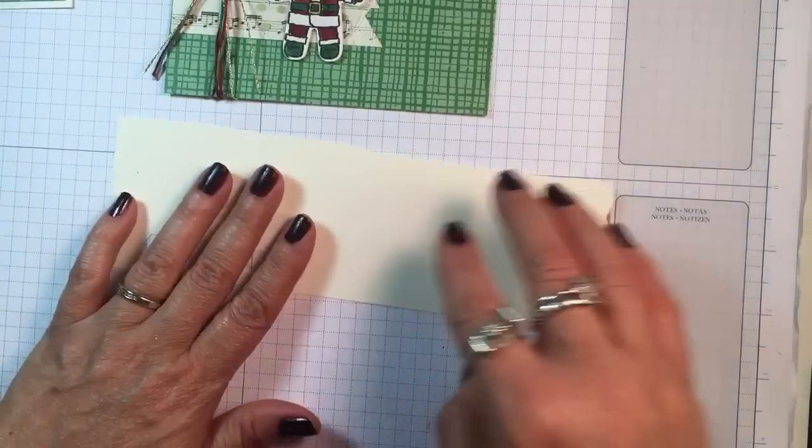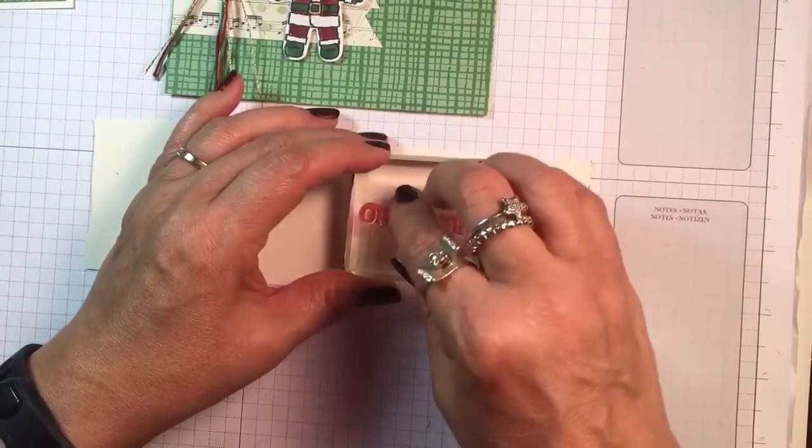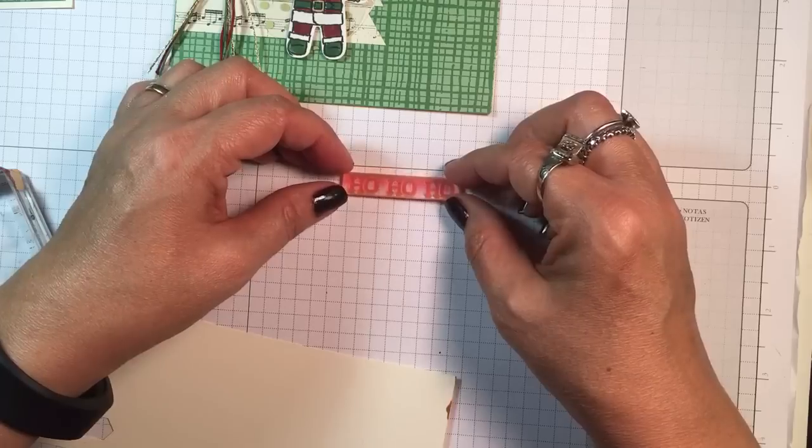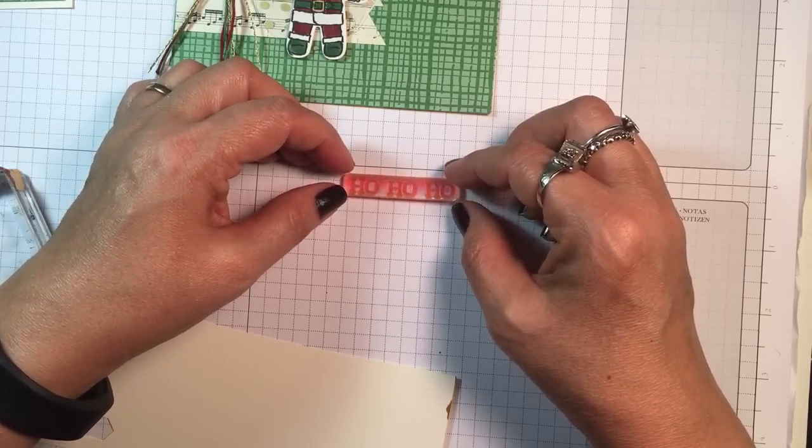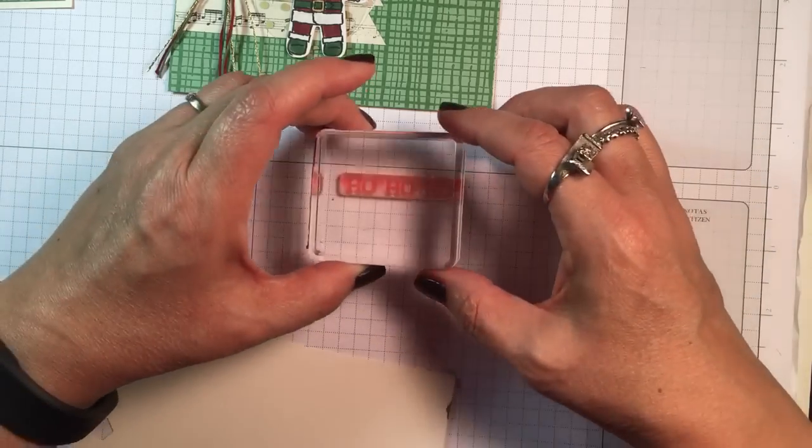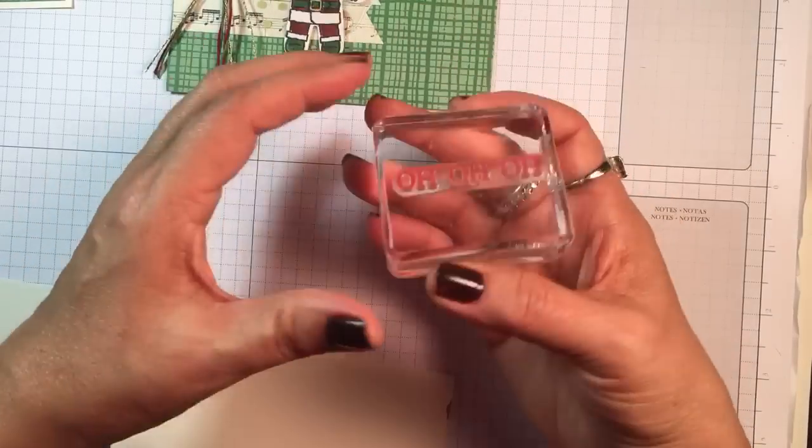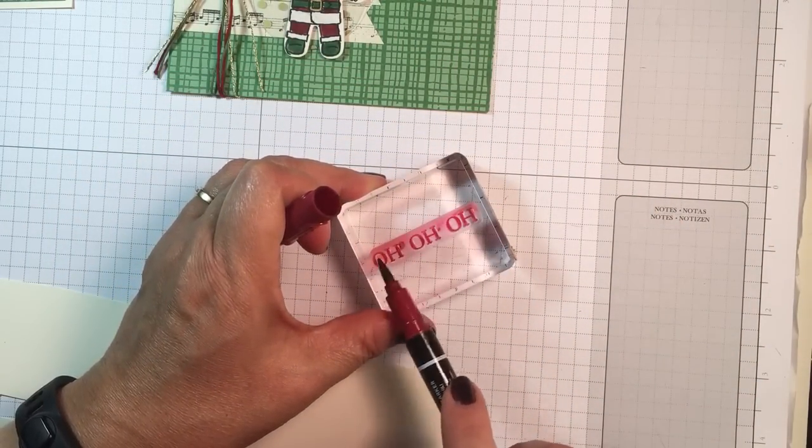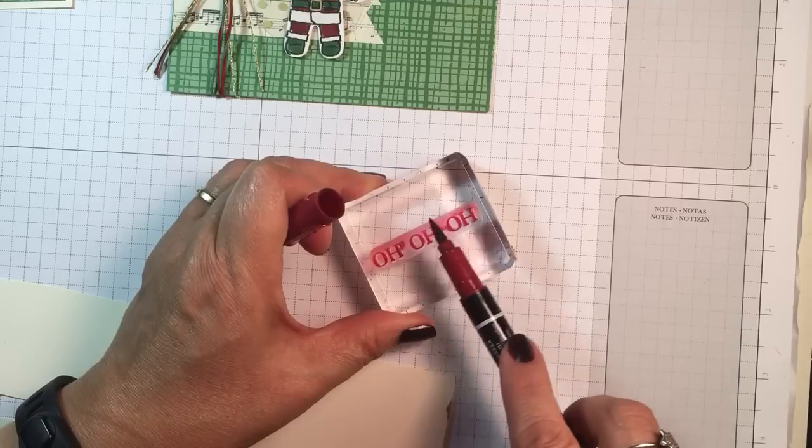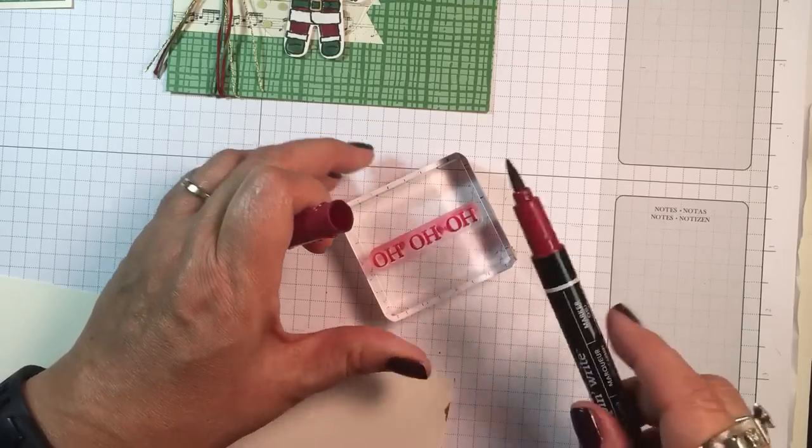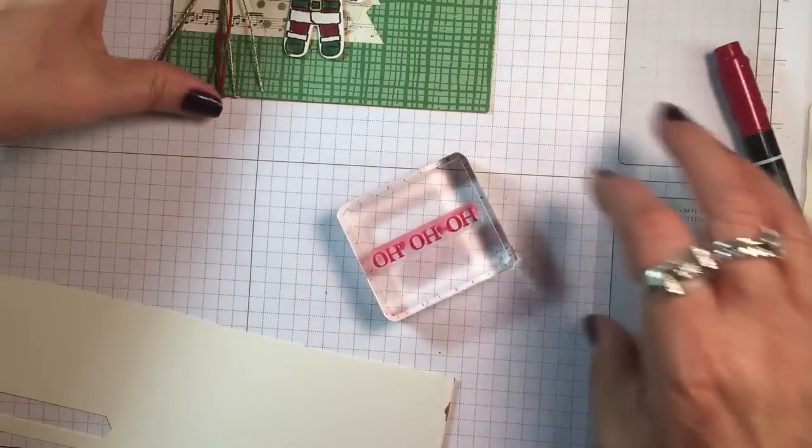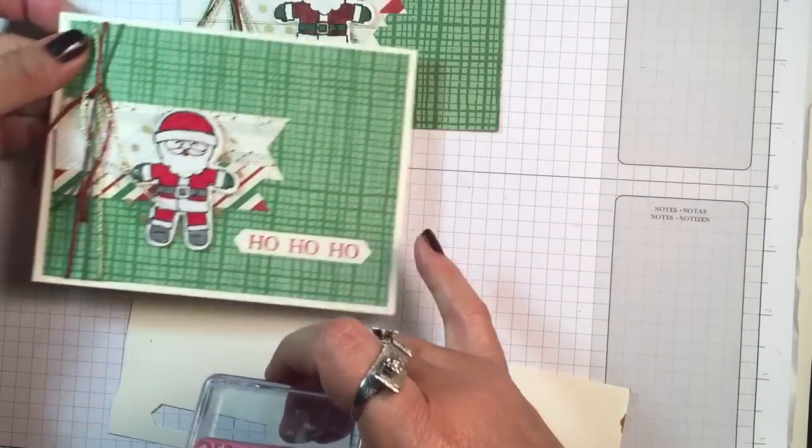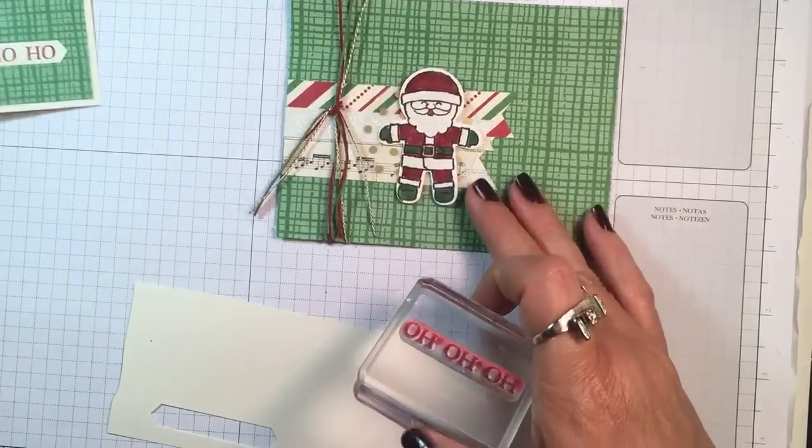Now let's trim some of this off. Super cute. All right, let's do our sentiment. I have very vanilla and the ho ho ho on here. I'm going to lay this - sometimes your photopolymer will bend when you apply it to the block if you're not careful. So I like to set mine down then stick my block over it like that. Cherry cobbler marker or you can use cherry cobbler ink pad, and really you could use real red as well.